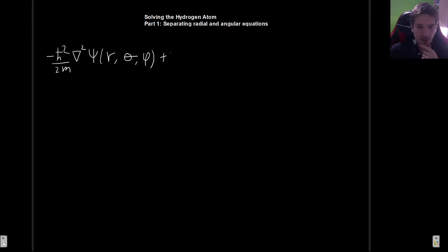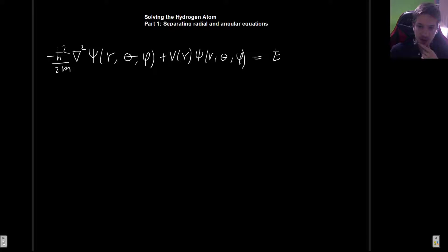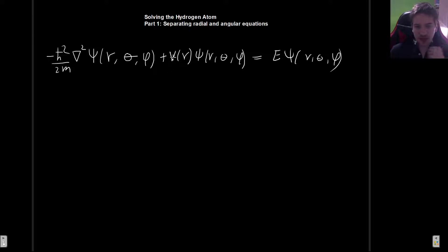We get plus the potential, which only depends on r — I will set it in later when we solve the radial part. This multiplies ψ(r, θ, φ) and equals Eψ(r, θ, φ). The question now is: what is the Laplacian? We need to find the wave function, and since we already know the potential, finding the Laplacian in spherical coordinates is what we need.